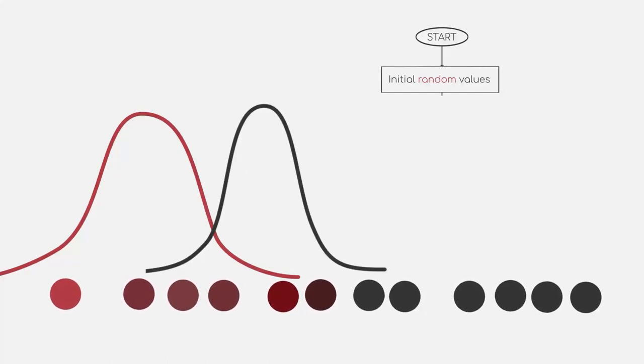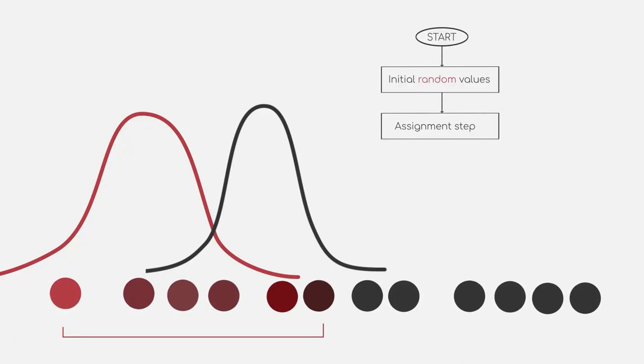Now similarly to what we did for the k-means algorithm, we want to assign each data point to a group. Intuitively, data points that are closer to the colored Gaussian curve will have a higher probability of belonging to the colored group. For example, the data point on the very far right is quite far from the colored Gaussian and closer to the non-colored one. Therefore, we can assume that it most likely belongs to the non-colored Gaussian.